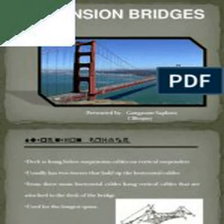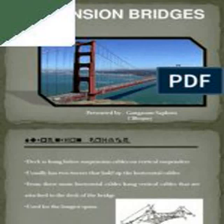The first wire cable suspension bridge was the Spider Bridge at Falls of Schuylkill, a modest and temporary footbridge built following the collapse of James Finley's nearby chain bridge at Falls of Schuylkill. The footbridge's span was 124 meters, although its deck was only 0.45 meters wide. Development of wire cable suspension bridges dates to the temporary simple suspension bridge at Annonay, built by Marc Séguin and his brothers in 1822, which spanned only 18 meters.